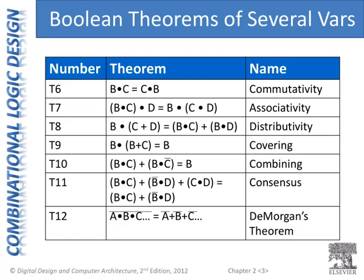Now let's talk about Boolean theorems of several variables. The numbering system is arbitrary — certainly don't need to memorize that, but it helps us keep them in order. We have T6 through T12. You'll recognize some of these names from regular algebra: commutativity, associativity, distributivity — those three sound pretty familiar.